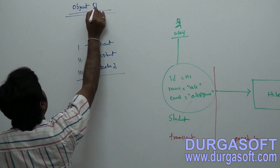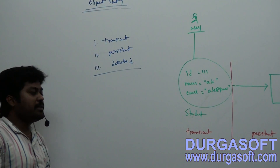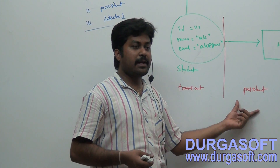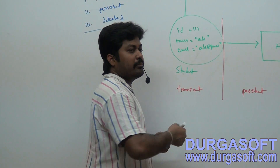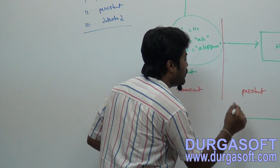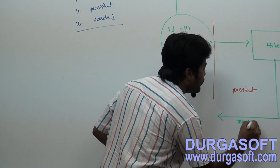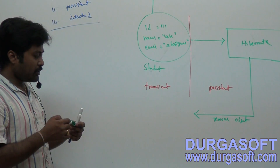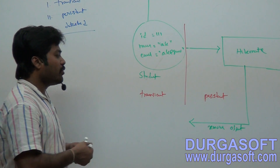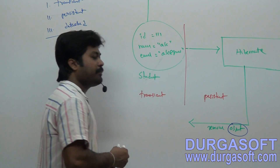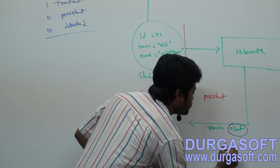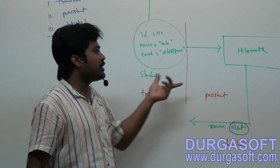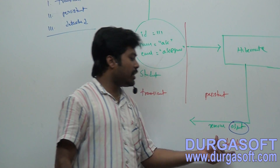We call these object states: transient state, persistent state, and detached state. When your object is before being attached to Hibernate, it is transient. If you attach your object to Hibernate, you can call it persistent. If you remove your object from Hibernate, that removed object is called detached. You can call it detached.